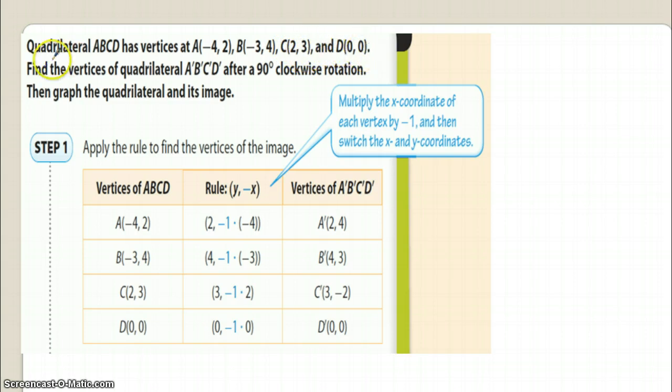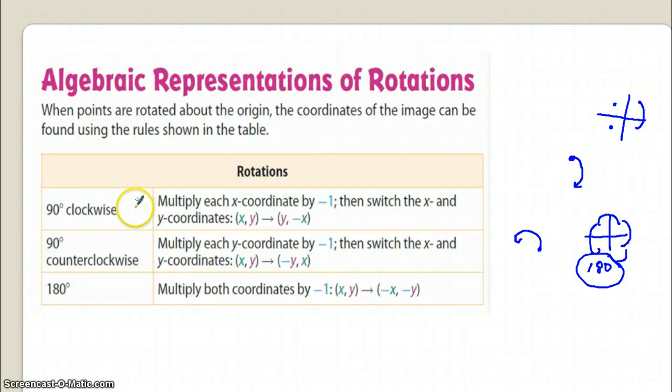So it says find the vertices of quadrilateral A prime, B prime, C prime, and D prime after a 90 degree clockwise. So remember you're going to be going back to your left. So let's go quickly and look at what the rules say. The rules say for 90 degrees, oh and I went the wrong way, didn't I?